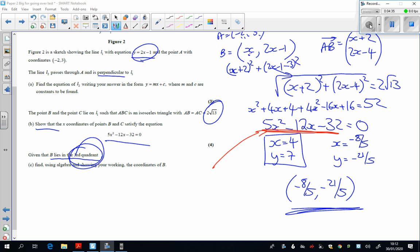You should have factorised it and found out the answer's 4 and minus 8 over 5 without using the calculator, saying that you should have shown all your working.